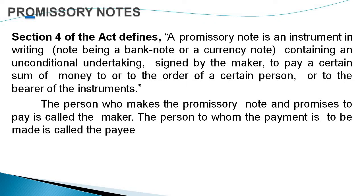Promissory note, as per Section 4 of the Negotiable Instruments Act of 1881, is defined as an instrument in writing — either a bank note or currency note — containing an unconditional undertaking signed by the maker to pay a certain sum of money to, or to the order of, a certain person or to the bearer of the instrument. In a promissory note, two parties are involved: the maker, who draws the promissory note and promises to pay, and the payee, the person to whom the payment is to be made.